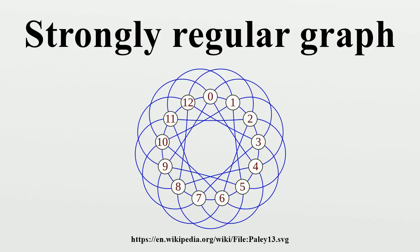The Schläfli graph is an SRG. The Chang graphs are SRGs. The Hoffman-Singleton graph is an SRG. The Sims-Gewirtz graph is an SRG. The M22 graph is an SRG. The Brouwer-Haemers graph is an SRG. The Higman-Sims graph is an SRG. The local McLaughlin graph is an SRG. The Cameron graph is an SRG. The Paley graph of order Q is an SRG. The n times n square rooks graph is an SRG. A strongly regular graph is called primitive if both the graph and its complement are connected; all the above graphs are primitive, as otherwise mu equals 0 or mu equals K.